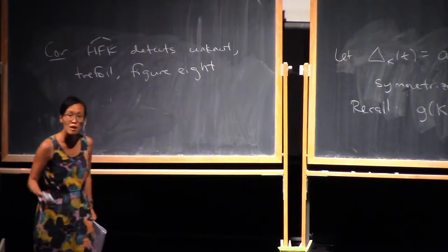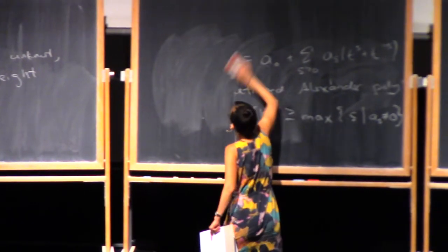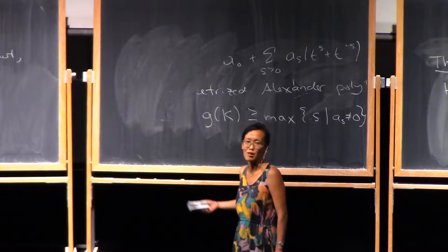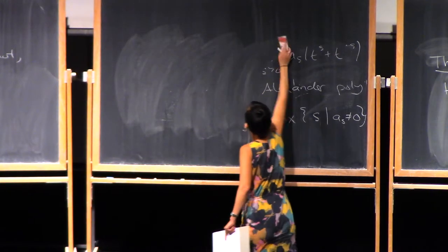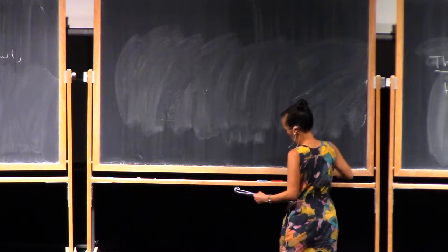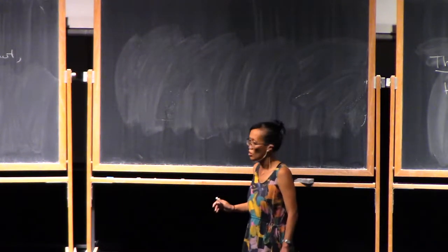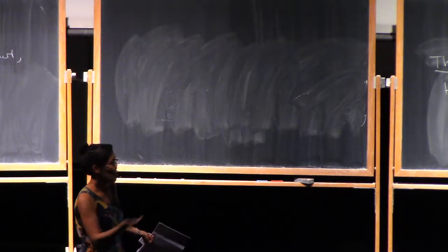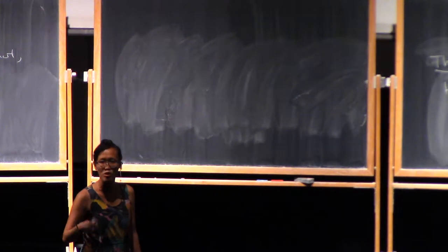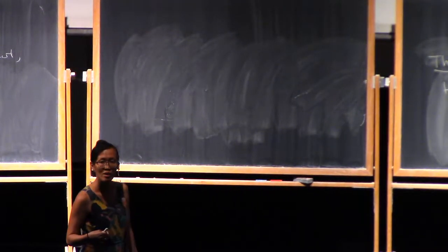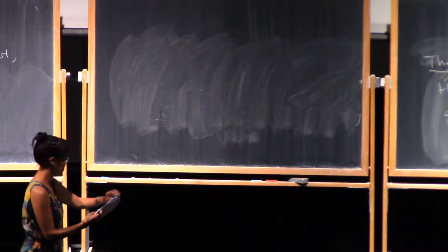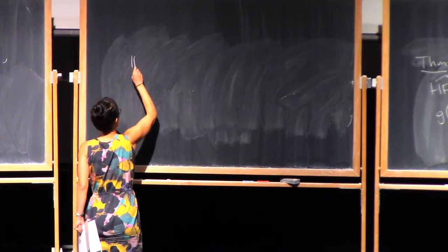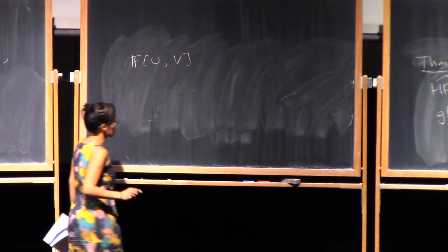Now that I've advertised some of the properties of knot Floer homology, let's dive into the definition. First, let me introduce a polynomial ring in two variables U and V. This is going to be bigraded. We'll call one of the gradings the U-grading and one the V-grading. The grading of the variable U will be negative two in the U-grading and zero in the V-grading. The grading of V will be zero in the U-grading and negative two in the V-grading.